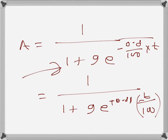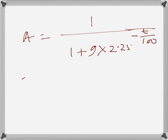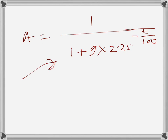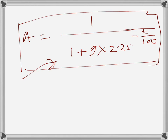We can also write this expression by noting that e^(0.81) ≈ 2.25. So instead of writing e to the power of something, we rewrite the expression as A = 1 / (1 + 9 × 2.25^(-t/100)). That is the final expression for the amount of A after t seconds.